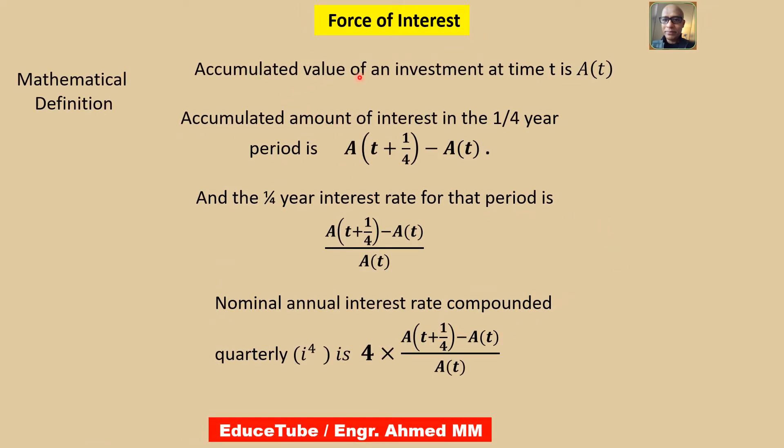Suppose the accumulated value of an investment at time t is A(t). Then the accumulated amount of interest in the one-fourth year period from time t to t + 1/4 is A(t + 1/4) - A(t). The one-fourth year interest rate for that period is this term divided by A(t).